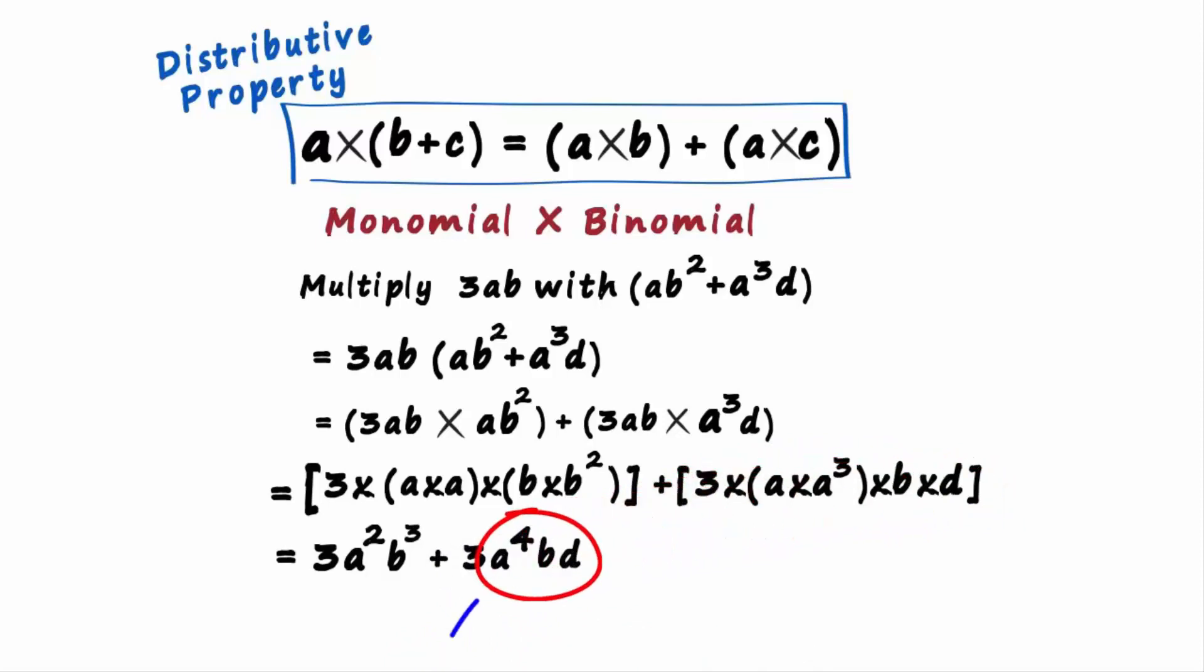The total exponent of this term's variables is higher, so we should write this first, then write this term. This is our final answer.